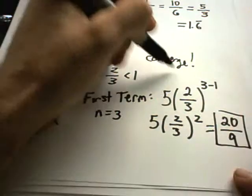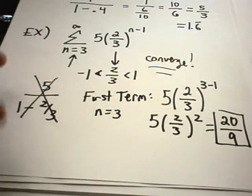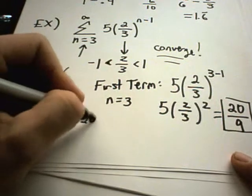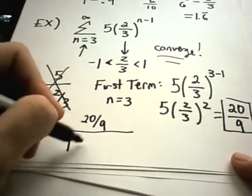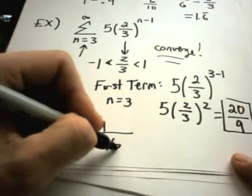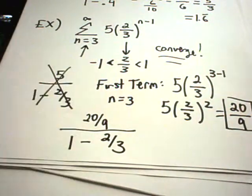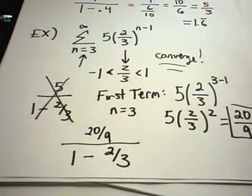So this series, again, definitely does converge. But it's not going to converge to this number. It's going to converge to 20 divided by 9 over 1 minus the common ratio, 2 thirds. And I'll let you simplify that one down. I don't feel like doing that one.